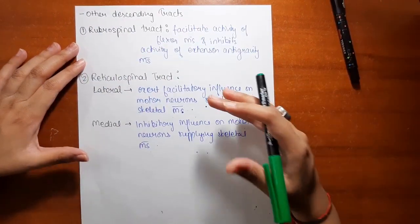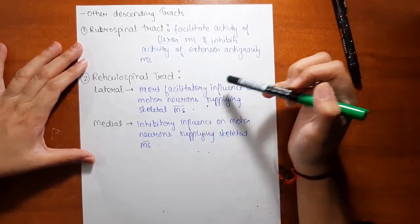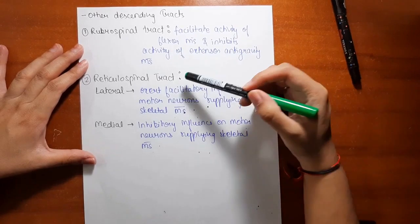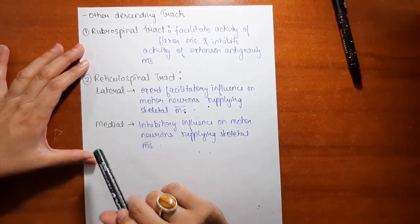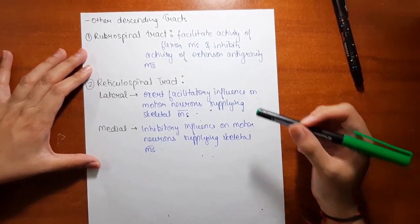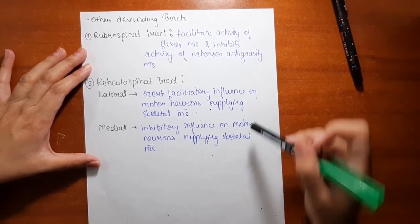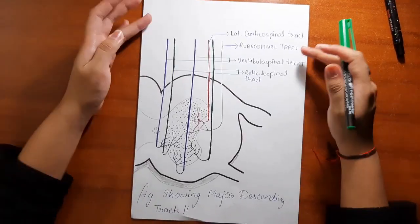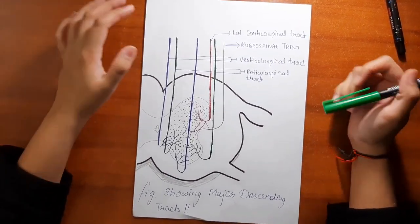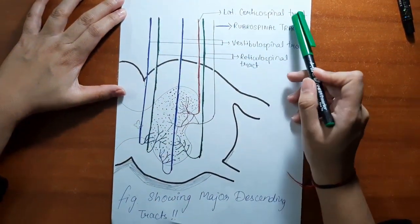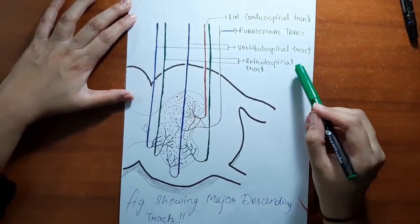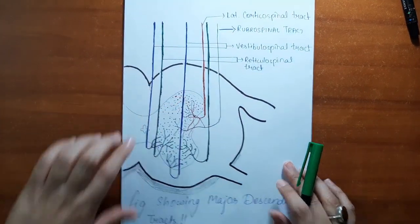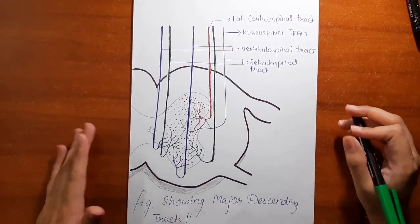Other descending tracts include the rubrospinal tract and the reticulospinal tract. The rubrospinal tract facilitates activity of flexor muscles and inhibits activity of extensor anti-gravity muscles. The reticulospinal tract is divided into lateral and medial parts: the lateral reticulospinal tract exerts a facilitatory influence on motor neurons supplying skeletal muscle, while the medial reticulospinal tract exerts an inhibitory influence. A diagram shows the major descending tracts: the lateral corticospinal tract in red, reticulospinal tracts in green, vestibulospinal tract in blue, and rubrospinal tract in black, showing the laminae each supplies. This completes our topic of spinal tracts.